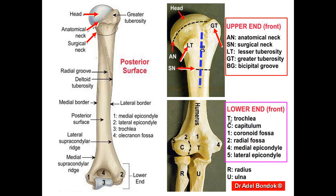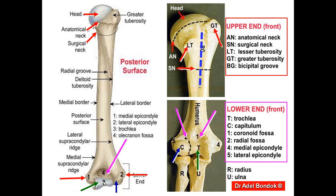The lower end is formed of an articular part and a non-articular part. The articular part is formed of trochlea and capitulum — the trochlea is medial, the capitulum is lateral. The trochlea articulates with the trochlear notch of the ulna to form the humeral-ulnar part of the elbow joint. The capitulum articulates with the upper surface of the head of the radius to form the humeral-radial part of the elbow joint. The non-articular part has two epicondyles, with the medial more projecting, and three fossae: coronoid fossa, radial fossa, and olecranon fossa posteriorly.